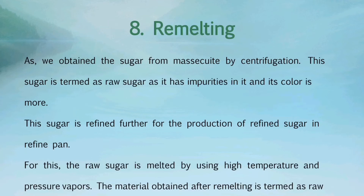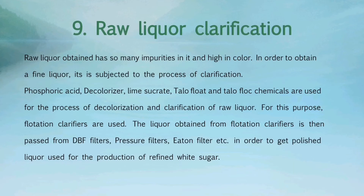After centrifugation, the next process is remelting. The sugar obtained from massecuite by centrifugation is termed as raw sugar, as it has impurities in it and its color is high. This sugar is refined further for the production of refined sugar in a refined pan. For this, the raw sugar is melted by using high temperature and pressure vapors. The material obtained after remelting is termed as raw liquor. Raw liquor obtained has many impurities in it and is high in color, so in order to obtain a fine liquor, it is subjected to the process of clarification.